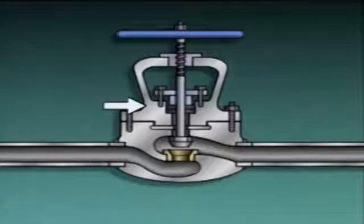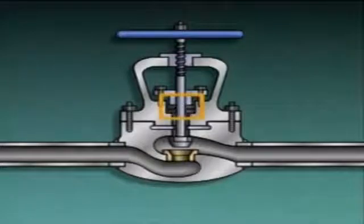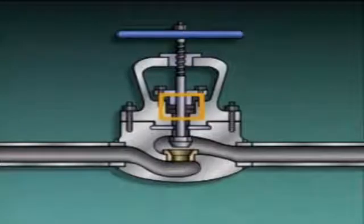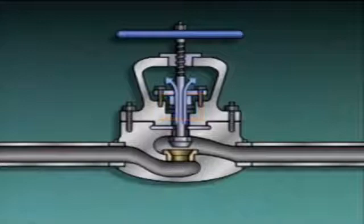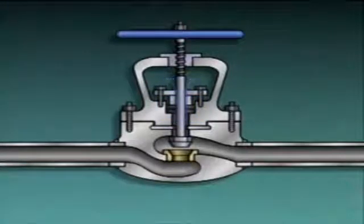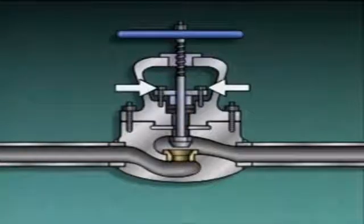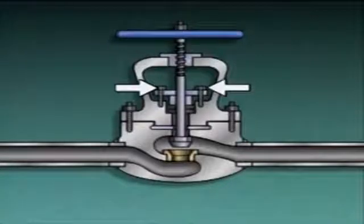The valve bonnet seals the top of the valve body. The stem extends through the bonnet and into a space called a stuffing box. The stuffing box holds the packing, which is installed around the stem. The packing is flexible and leak resistant — it prevents leakage from the valve along the stem. The pressure applied to the packing by the packing gland is adjusted using gland nuts, so that the valve stem can be moved as the valve is repositioned but leakage does not occur around the stem.